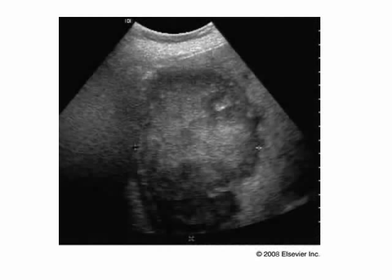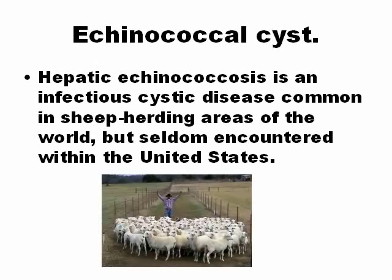Echinococcal cyst is a disease found in areas of sheep herding. It is very rare in the United States, but in other parts of the world with sheep herding it is a common disease, very easy to recognize with ultrasound. It is also a very common question in certification examinations.